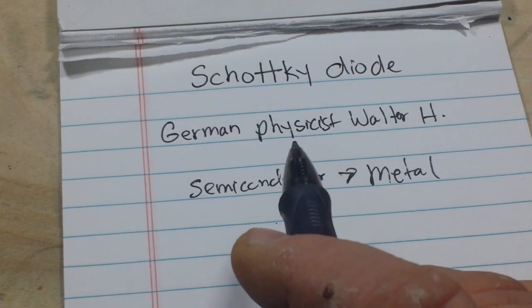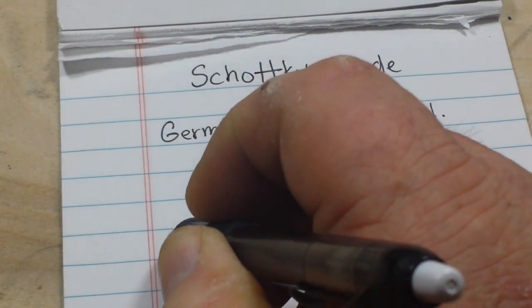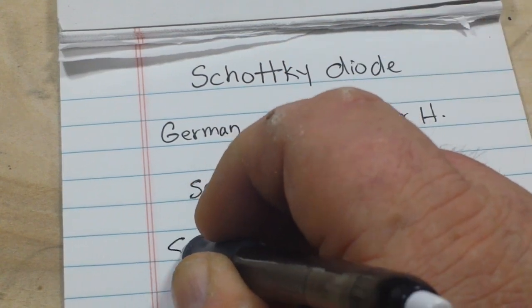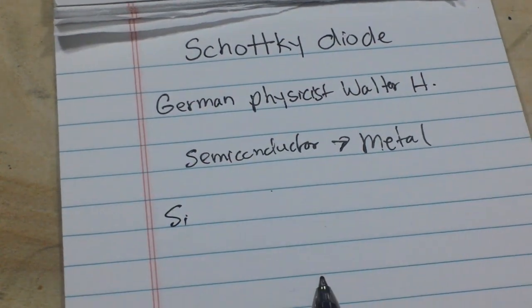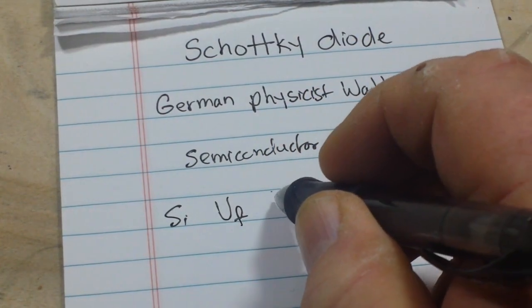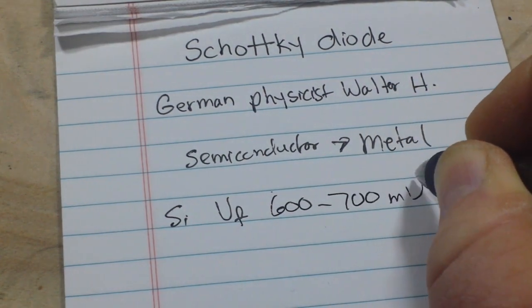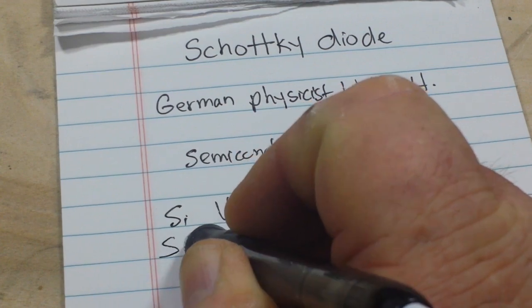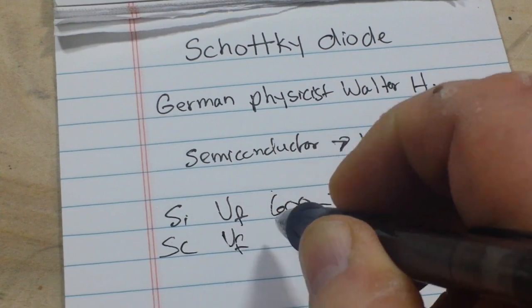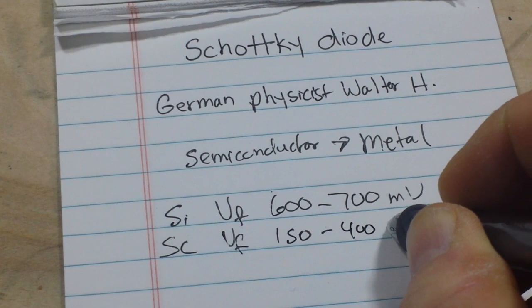The forward voltage drop is determined by the type of metal. So if we take a standard 1N4007, the silicon diode, it's going to have a forward voltage drop, known as VF, of about 600 to 700 millivolts. Whereas our Schottky diode has a forward voltage drop of 150 to about 400 millivolts.